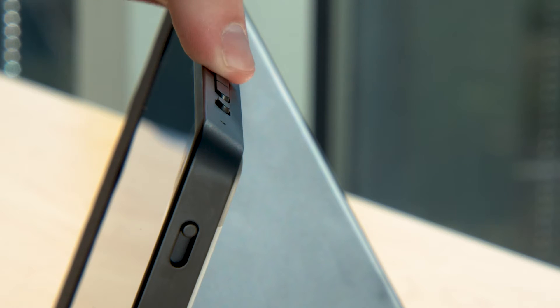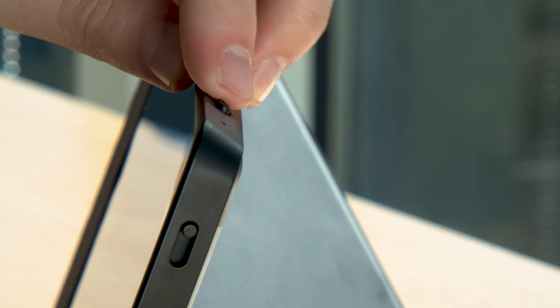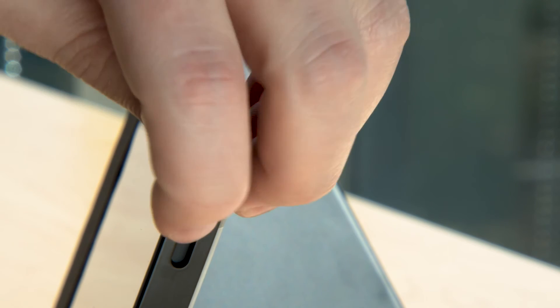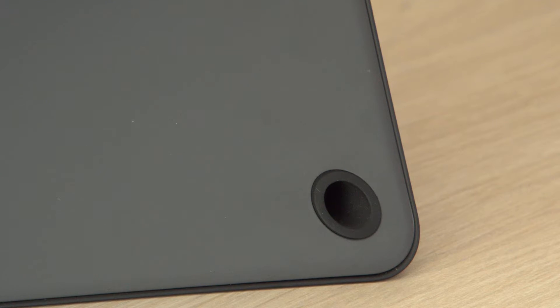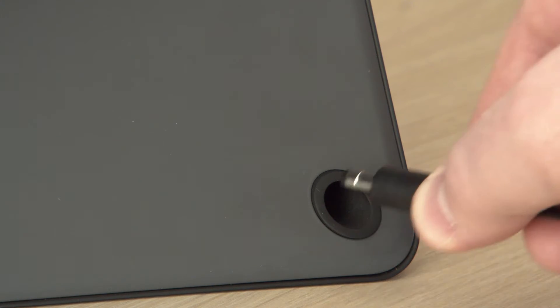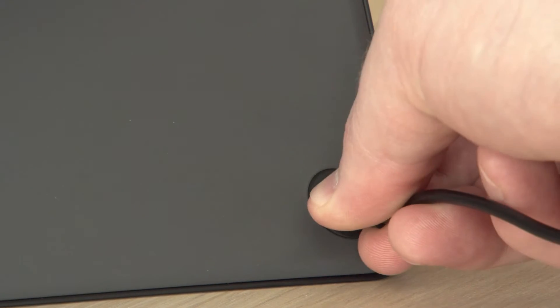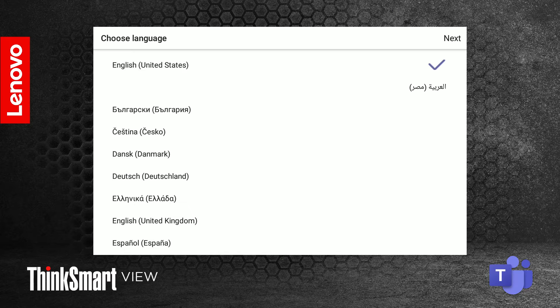On the top of the device, you can find the volume and mute buttons, as well as a switch to toggle the camera shutter on the side. To power the device, simply plug it into an available power outlet. The device should start up automatically.